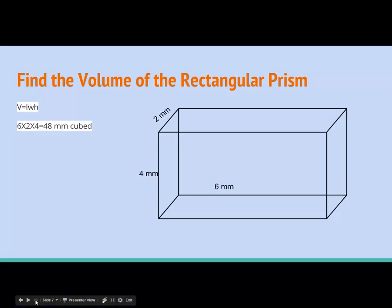To find the volume of this rectangular prism, we're going to multiply length times width times height.